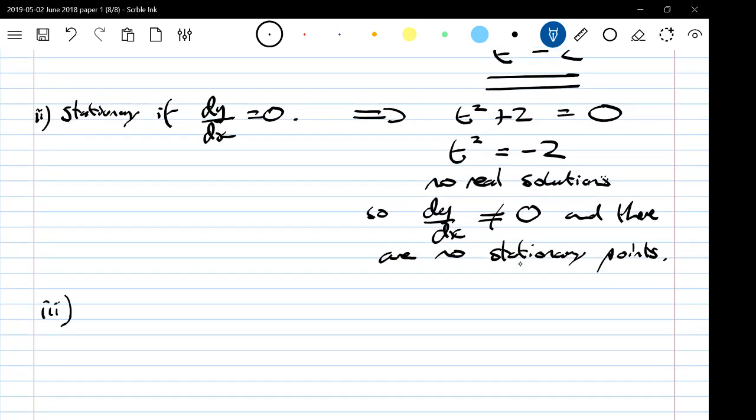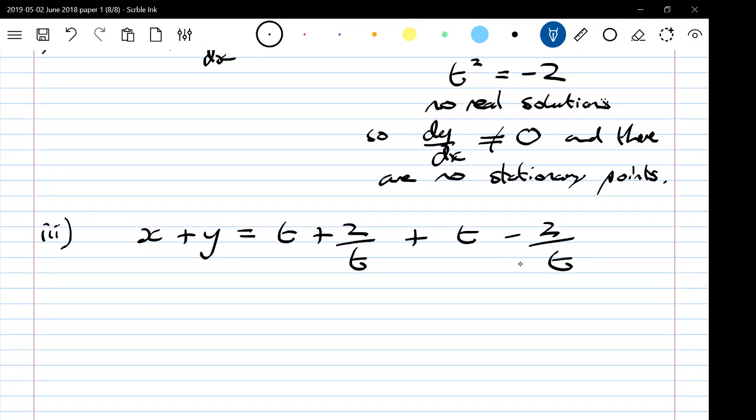In part three, the Cartesian equation means get rid of t, just write y as a function of x. So x plus y, and the reason that you're supposed to consider that is it's gloriously simple. This says x plus y is 2t.